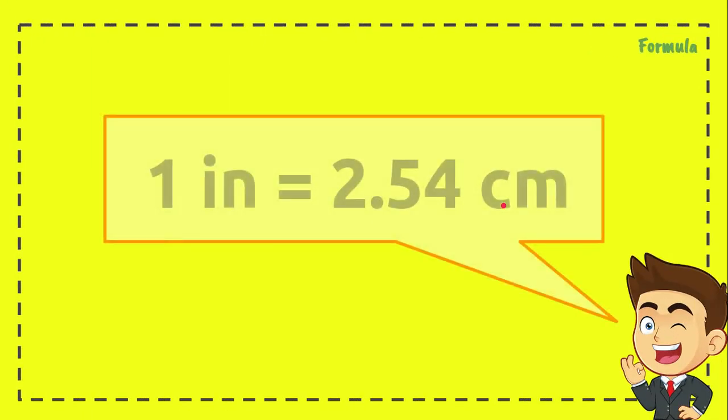Before we are solving the problem, we need to know the conversion factor, or you can call it the formula. And here is the formula: 1 inch equals 2.54 centimeters. If we want to convert inch to centimeters, then we must know these numbers, 2.54 centimeters. That's the conversion factor.